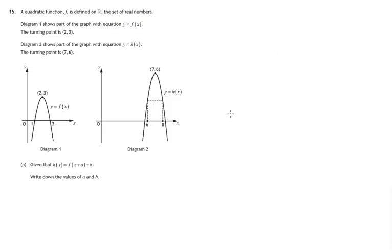So now we're in a position to look at this question. If this graph is related to the first graph in the manner f of x plus a plus b, we can say: adding numbers to x slides the graph to the left — that's not what's happening. The graph seems to be sliding to the right. If this maximum point started at 2, 3 and ended up at 7, 6, we've moved 5 units to the right. From the demonstrations you saw, you would have to subtract 5 from x, so for part a, a equals negative 5.